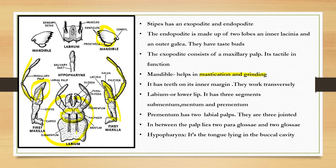The lower portion is called the submentum. So submentum, mentum, and prementum are the three parts of the labium. The prementum is the upper part. There are also the labial palps on the side.